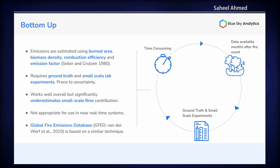Using coarse resolution data also becomes a point of underestimation, as some small-scale fires don't fall under this coarse resolution and significantly underestimates their contribution — especially for agricultural burning in agricultural majority regions, which doesn't come under 500 meter or 1 kilometer spatial resolution. The methodology also has a time delay component: burnt area datasets only become available weeks and months after the event has already passed, creating a delay in sharing information.